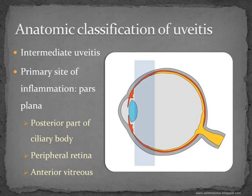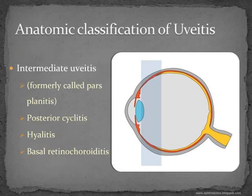Next, intermediate uveitis refers to the intermediate zone — the pars plana region. The pars plana and the peripheral retina, which is the anterior retina, are closely adherent to the anterior vitreous. Inflammation occurring in these three zones — the posterior part of the ciliary body (pars plana), the peripheral retina, and the anterior vitreous — gives rise to intermediate uveitis. This is also called pars planitis. Subcategories include posterior cyclitis when the pars plana is predominantly involved, hyalitis when the vitreous is involved, and basal retinochoroiditis when the anterior retina and choroid are involved.